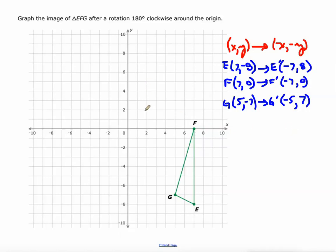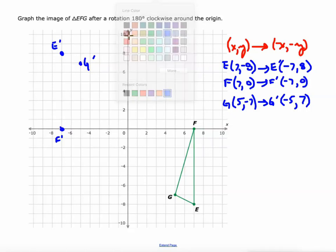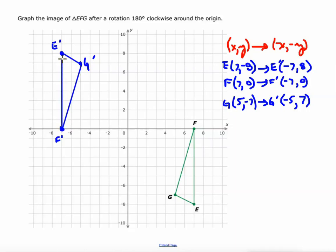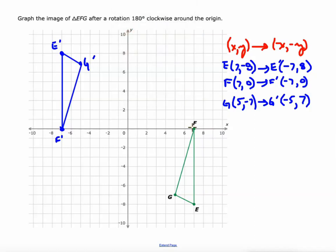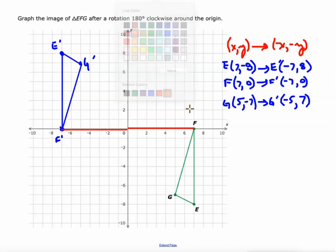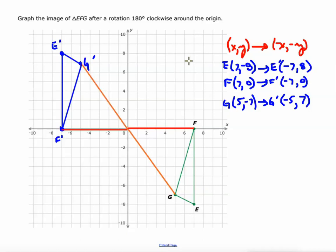Plot those points: (-7, 8), (-7, 0), and (-5, 7). Connect them with straight lines — IXL will do this for you. That is the image after a 180 degree rotation. Connecting F to origin to F prime gives a 180 degree angle, and G to origin to G prime is also a 180 degree angle.